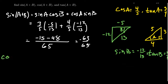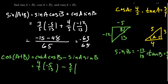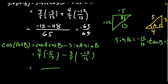Now let's do cosine. Cosine of A plus B equals cosine of A cosine of B minus sine of A sine of B. Cosine of A is four-fifths, cosine of B is negative 5 thirteenths, sine of A is three-fifths, and sine of B is negative 12 thirteenths. So 5 times 13 gives denominator 65. Four times negative 5 is negative 20, and negative 3 times negative 12 is positive 36. So we get negative 20 plus 36 = 16 over 65.